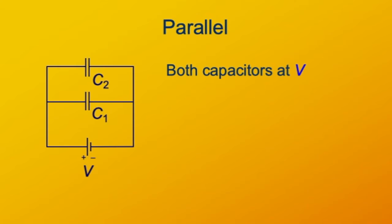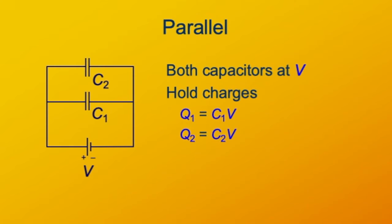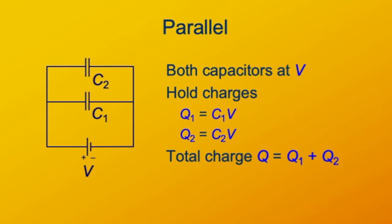Since they're capacitors, that means that each one holds a charge that's proportional to the voltage across it, and it's also proportional to its capacitance. So the total charge held on the plates of both capacitors — the total charge that goes into this parallel combination — is the sum of these two by Kirchhoff's current rule. The charge on the capacitors is the accumulation of the current that goes through them, and the total charge on this group of capacitors is Q1 plus Q2.